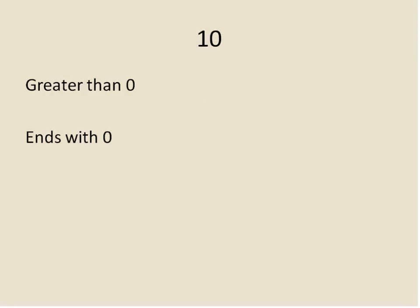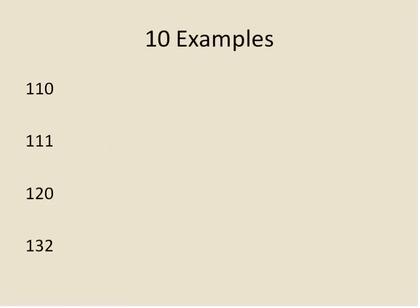Number 10 has to be greater than 0 and end with 0. So basically it can't be 0, but all other numbers that end with 0 are divisible by 10. Looking at examples: 110, 111, 120, 132. We look at the ones column — if it's a 0 it's divisible by 10; if it's a 1, 2, or anything other than 0, it's not. So 10 is a factor of 110 and 120, but not a factor of 111 or 132.